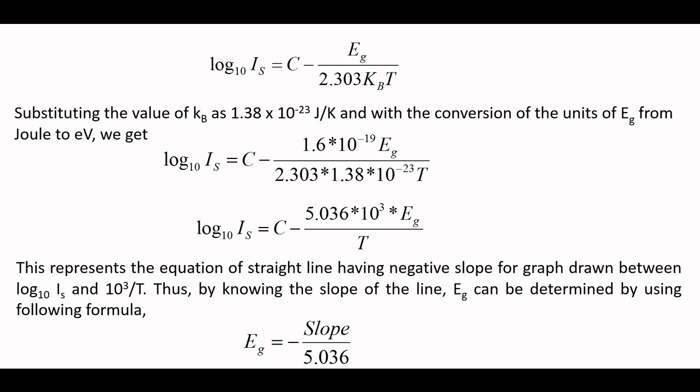While performing the experiment, we will first increase the temperature of the diode by the heating arrangement. Once the temperature rises to let us say 80 degree Celsius, we will switch off the heating and allow the cooling to start. We will note down the values of saturation current while cooling. The saturation current can be recorded in steps of 3, 4, or 5 degree Celsius decrease in temperature.